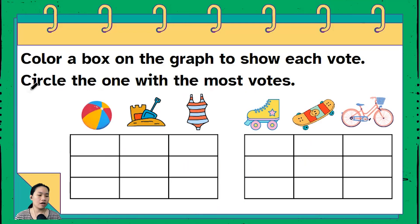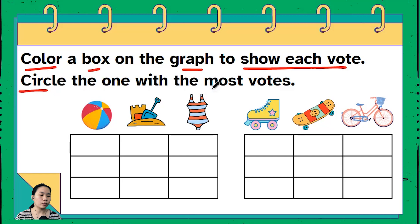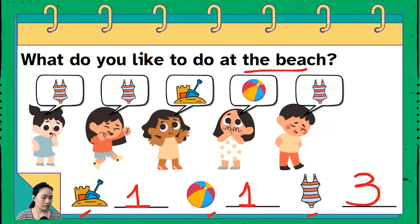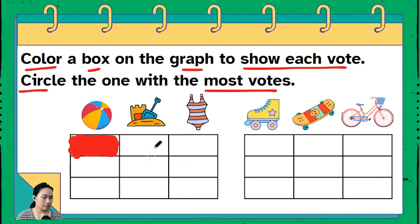This is the last part of our lesson for today. We'll be coloring a box on the graph to show each vote, and then we'll circle the one with the most votes. I'm gonna use the color red. First, beach ball — there's only one kid, so I'm coloring only one rectangle. Sand castle — there's only one, so I'm coloring the rectangle next to the previous one.